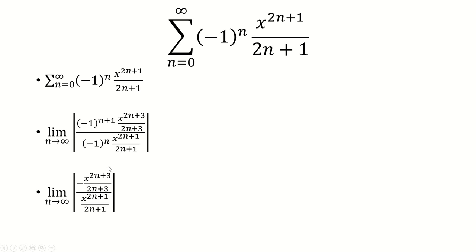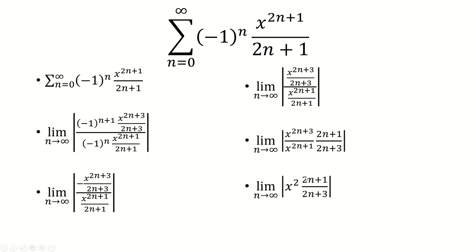And then we'll simplify further. The negative will disappear because we're looking at absolute value, so that goes away. And then we're going to rearrange it this way. So the x to the 2n plus 3 will be on top of x to the 2n plus 1, and then the 2n plus 1 is going to be on top of 2n plus 3. Now, x to the 2n plus 3 over x to the 2n plus 1 is just x squared when you subtract the exponents.